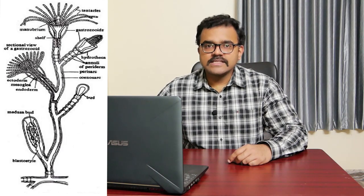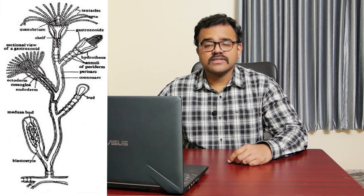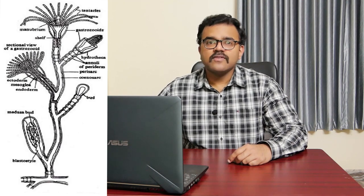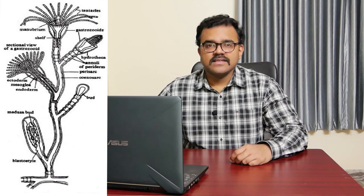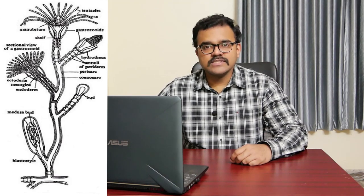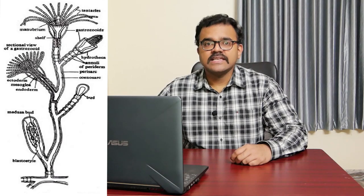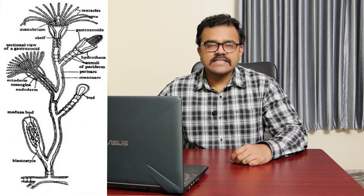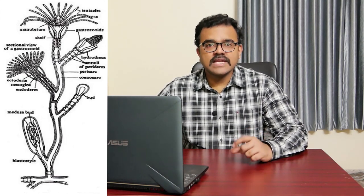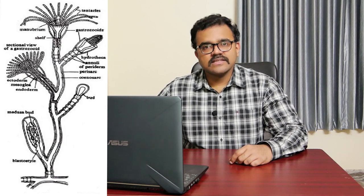Both the hydrorhiza and the hydrocollus consist of hollow tubes called coenosarc, covered externally with a chitinous perisarc. The coenosarc is made of two cellular layers: the outer one designated as ectoderm and the inner layer called endoderm. In between the two layers there is a thin layer of mesoglea. The coenosarc contains a tubular cavity known as the coelenteron, which is continuous throughout the colony and is filled with fluid.